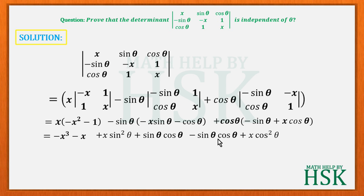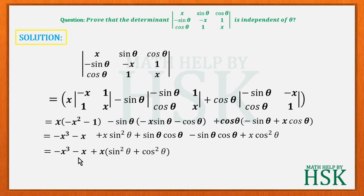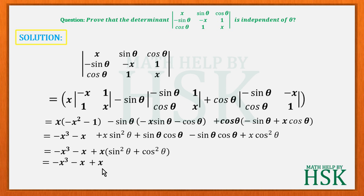The sinθ cosθ terms cancel out. From the remaining terms x sin²θ and x cos²θ, we take x as common, giving us -x³ - x + x(sin²θ + cos²θ). Since sin²θ + cos²θ = 1, this becomes -x³ - x + x. The x terms cancel out, and the value equals -x³.